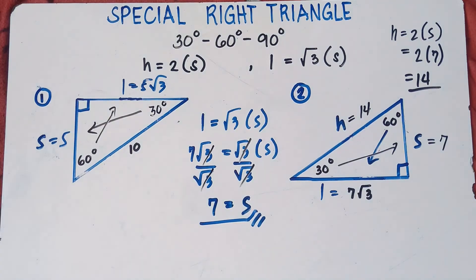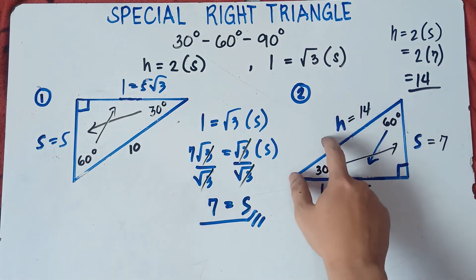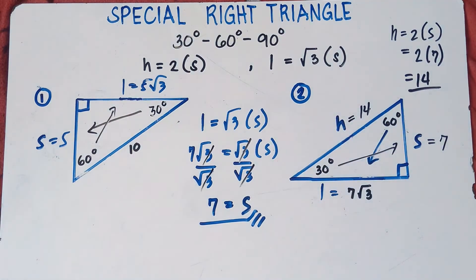Just multiply the shorter leg by 2 to get the hypotenuse of 14. That's it for number two — easy, right? Let's try more examples.